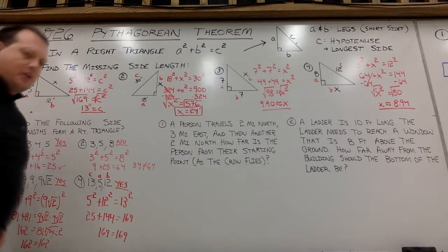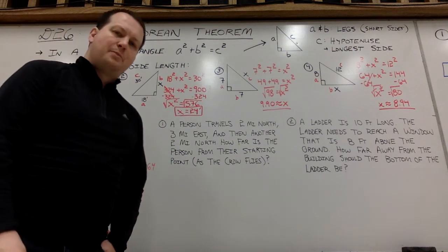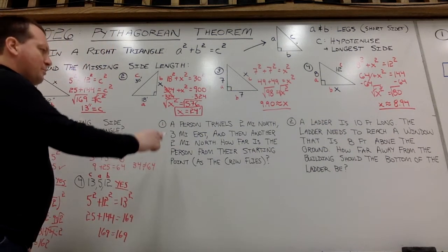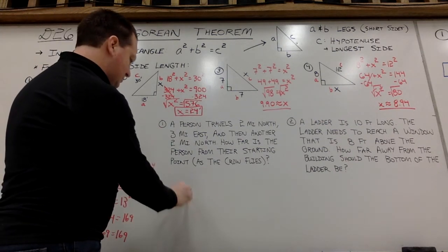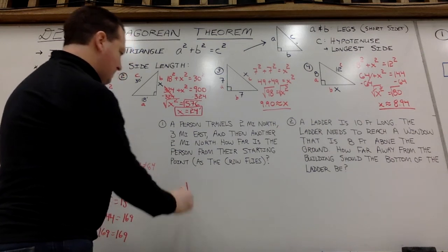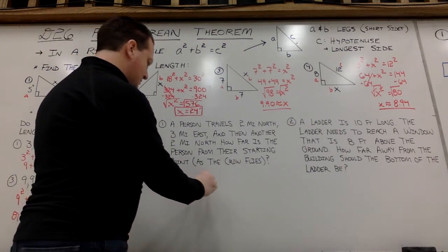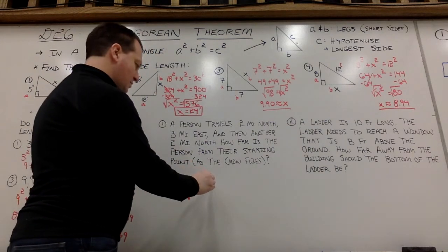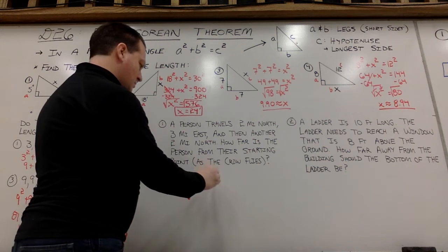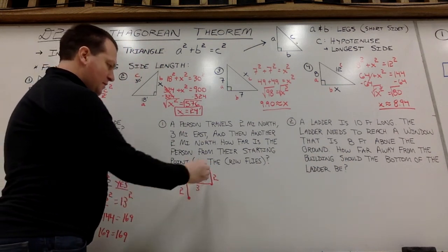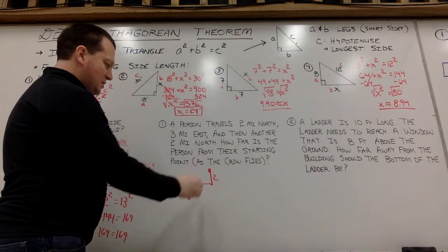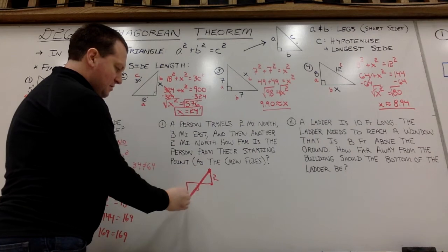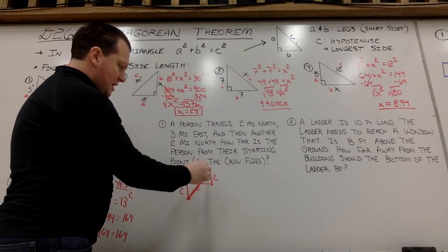All right, a couple of word problems here. Please draw a picture. Draw it out. There's no better way. So we got a person traveling two miles north, three miles east, and then another two miles north. We want to know how far is the person from their starting point as the crow flies. So what that means is the straight line distance.